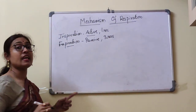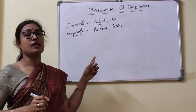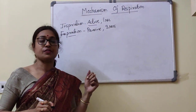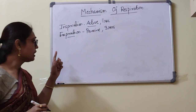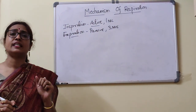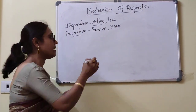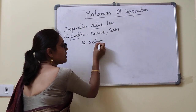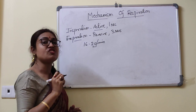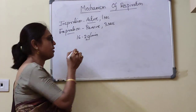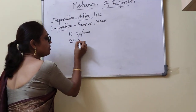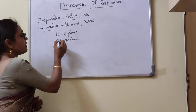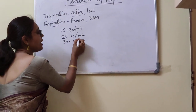In case of forceful expiration, there must be participation of some muscles. The normal respiratory rate for adults is 16 to 20 per minute. In children it is a little bit higher, about 25 to 30 per minute. And in neonates, it is 30 to 40 per minute.